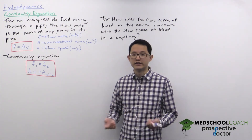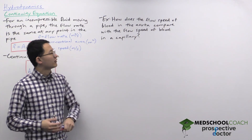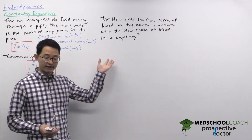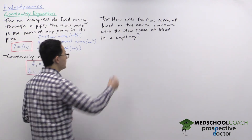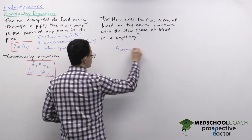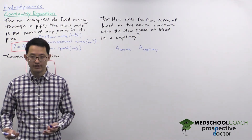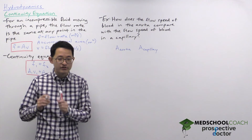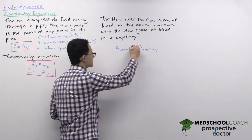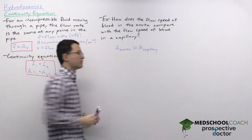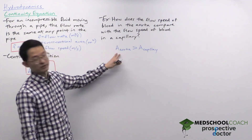As one application of the continuity equation, consider this example: how does the flow speed of blood in the aorta compare with the flow speed of blood in a capillary? This ties in some biology. We can first compare their cross-sectional areas. Capillaries are tiny blood vessels, so their cross-sectional area is much smaller than the aorta, which is the large blood vessel from which all blood is pumped out to supply systemic circulation — so the aorta has a greater cross-sectional area.